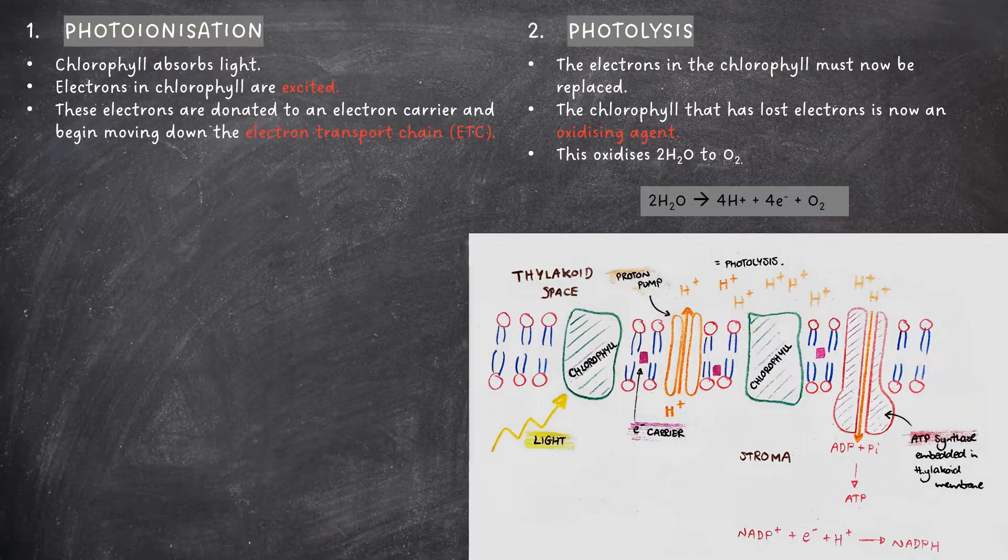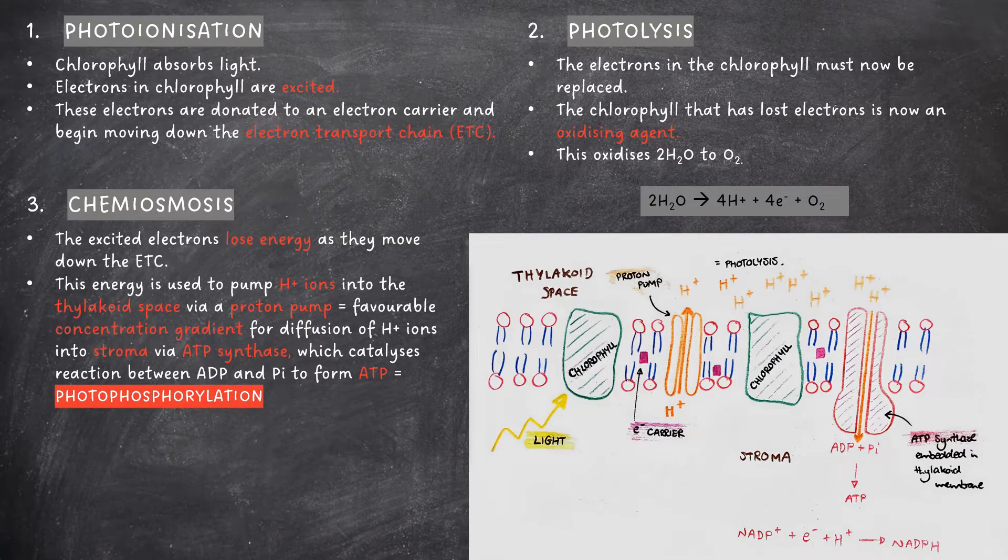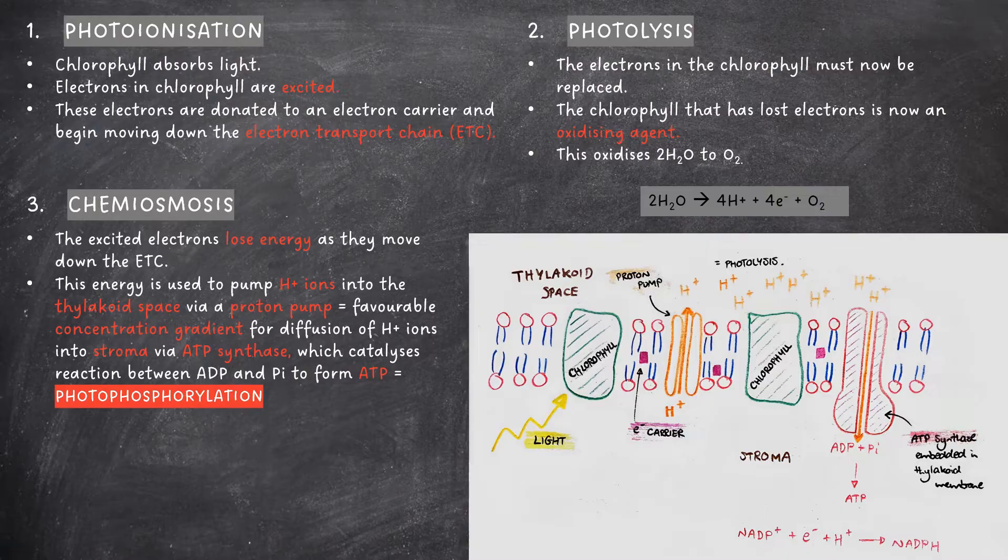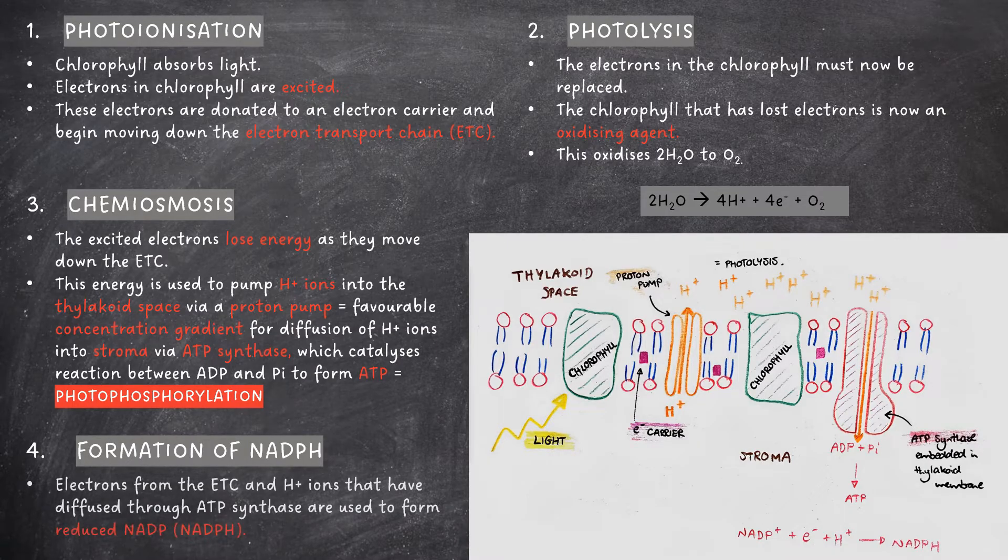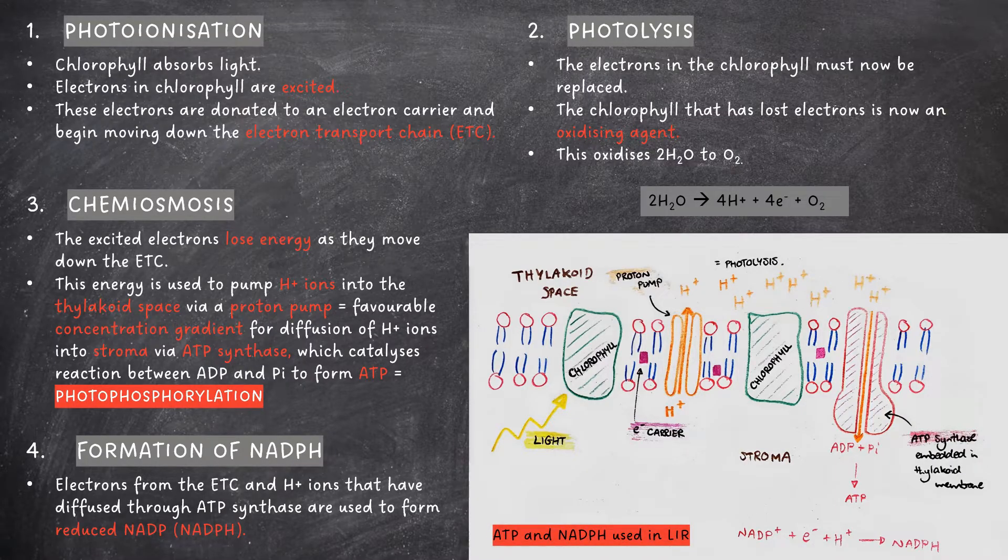Next we have a process known as chemiosmosis. The excited electrons from photoionization lose energy as they move down the electron transport chain. This energy is used to pump hydrogen ions into the thylakoid space via a proton pump. This creates a favorable concentration gradient for the diffusion of hydrogen ions from the thylakoid space into the stroma. The hydrogen ions diffuse through the enzyme ATP synthase which catalyzes the reaction between ADP and PI to form ATP. This is known as photophosphorylation. Finally we have the formation of reduced NADP. Electrons from the electron transport chain and hydrogen ions that diffuse through ATP synthase are used to form reduced NADP. The ATP and reduced NADP then go on to be used in the light independent reaction.